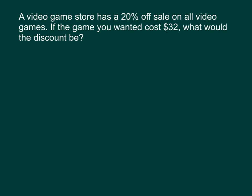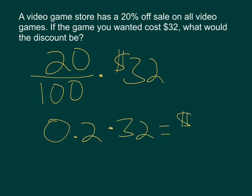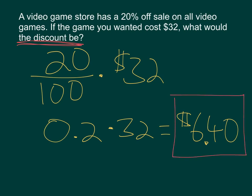Question seven says a video game store has a 20% off sale on all video games. If the game you wanted cost $32, what would the discount be? We just need to take 20% of 32. To do that, we just multiply them: 20% times $32, same thing as 0.2 times 32, equals $6.40. It doesn't ask what the final price is, just what the discount would be. So the discount is $6.40.